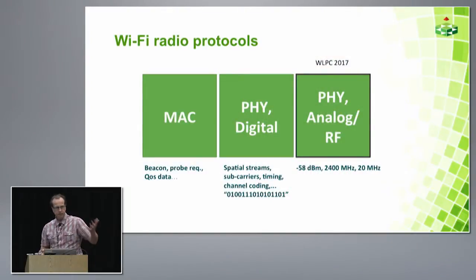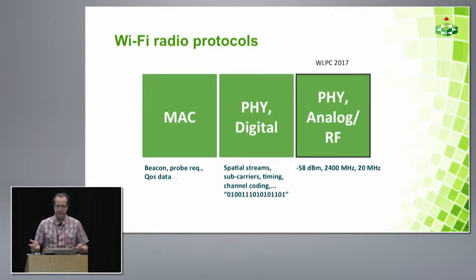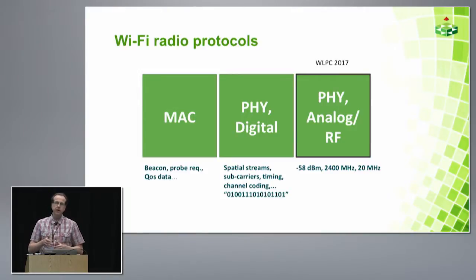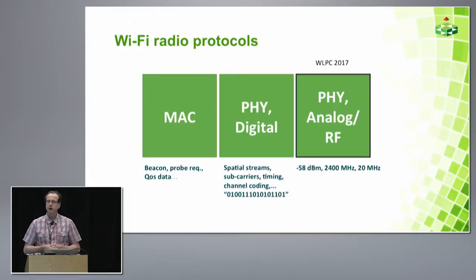Wi-Fi is about MAC and physical layer. The MAC protocols include beacons, probes, and so on. On the physical side, we have digital processing including spatial streams, subcarriers, and channel coding. The output from this digital phase feeds a digital-to-analog conversion, which outputs a voltage that becomes the transmitted signal. We'll be focusing on the physical and analog/RF aspects in this presentation.